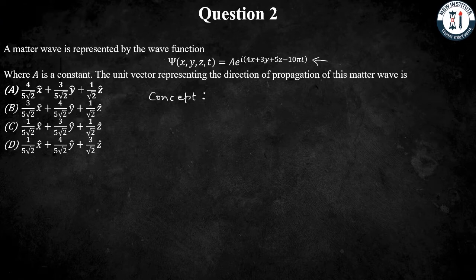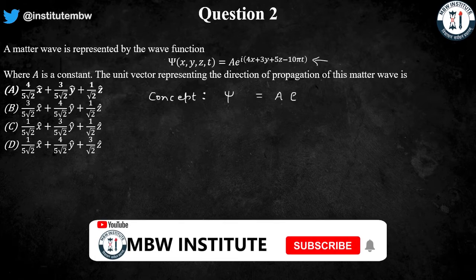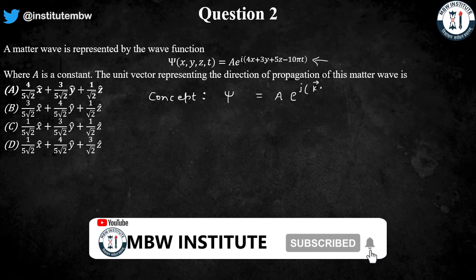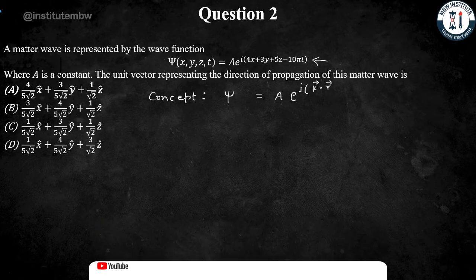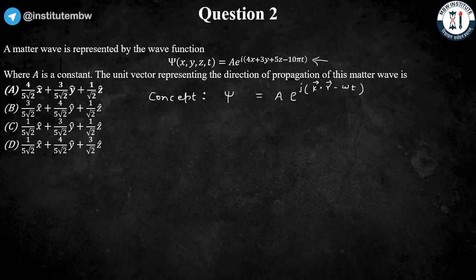we know that the general form for the matter wave is ψ = A e^(i(k⃗·r⃗ - ωt)).